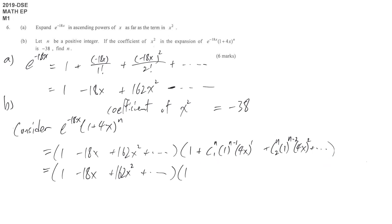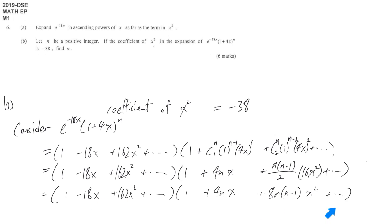nC1 that means n. So this is positive 4n times x. And then nC2 that means n times the next n minus 1 and then divide by 2 factorial, that means 2, and times 16x squared here. So finally we tidy up both brackets then we can focus on the coefficient of x squared.